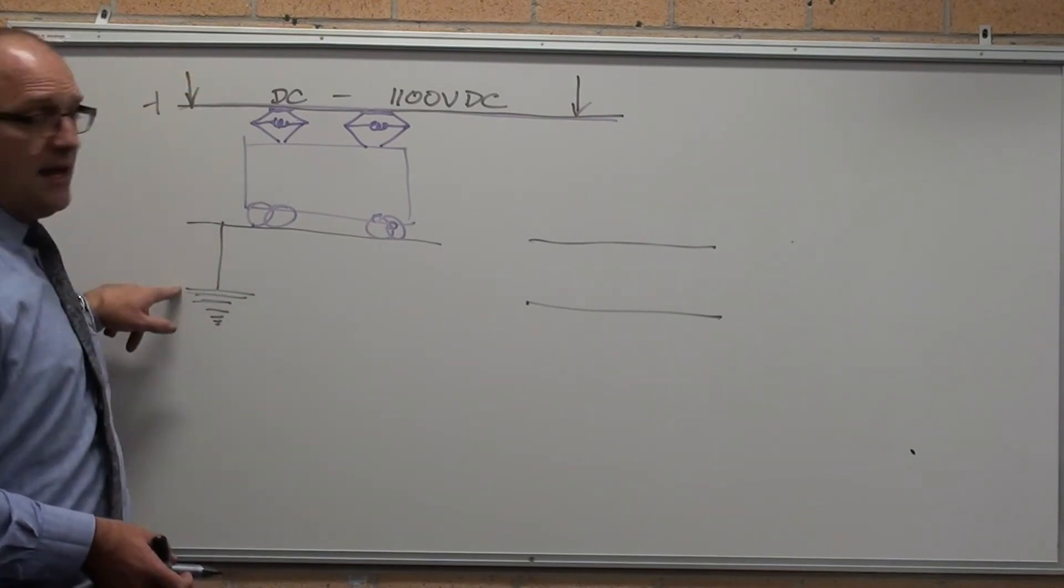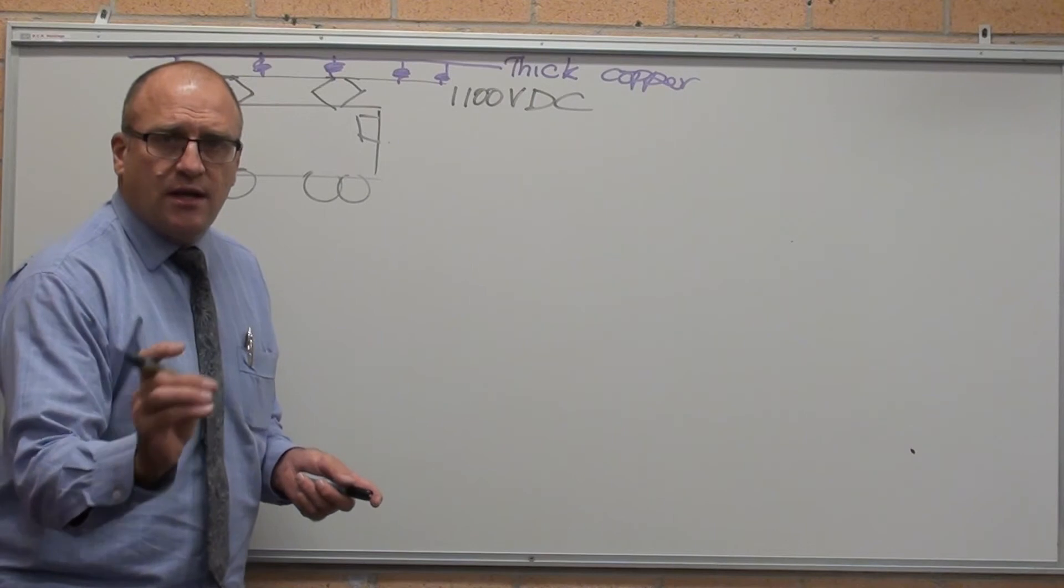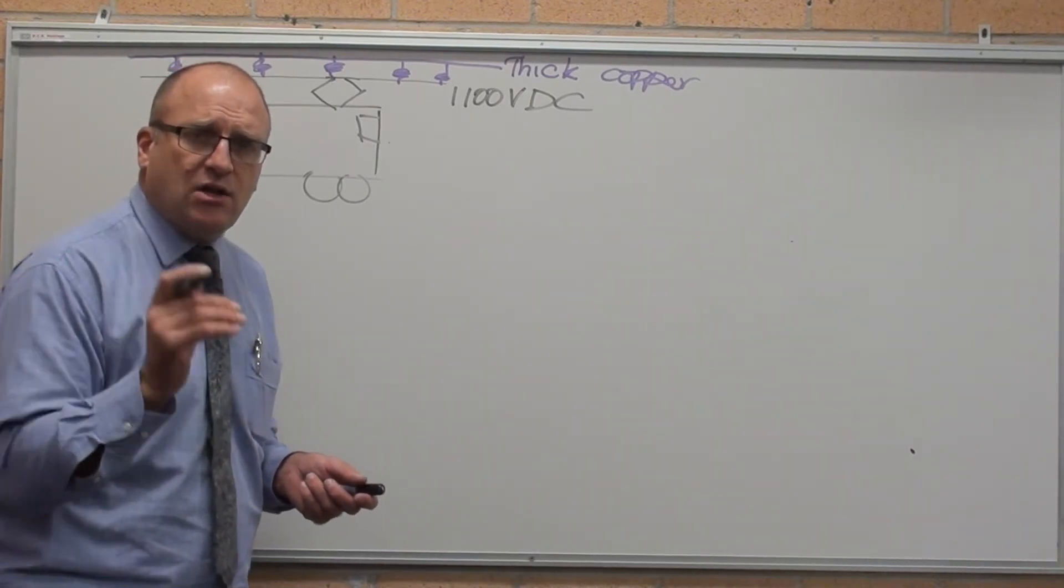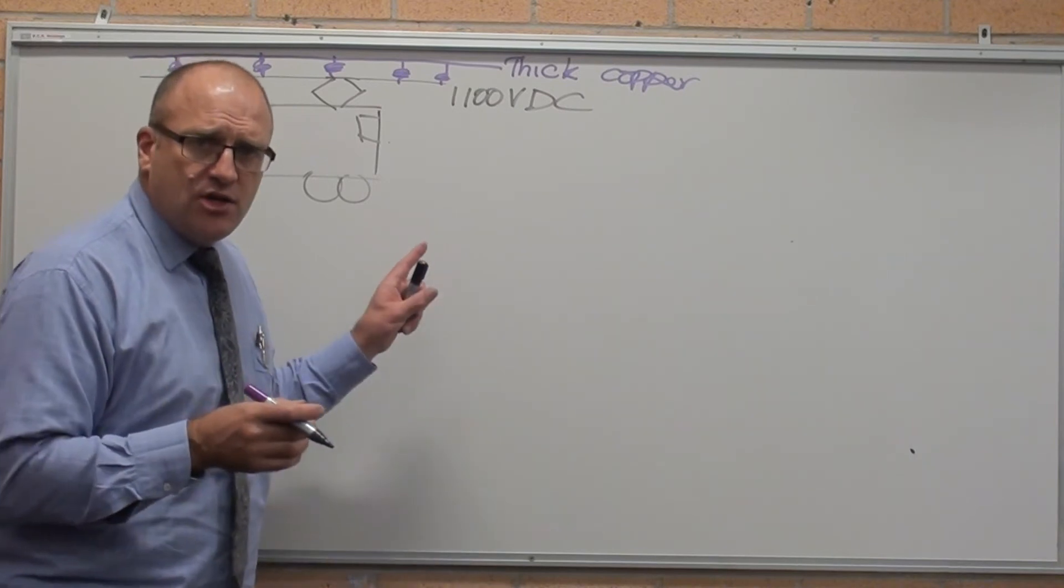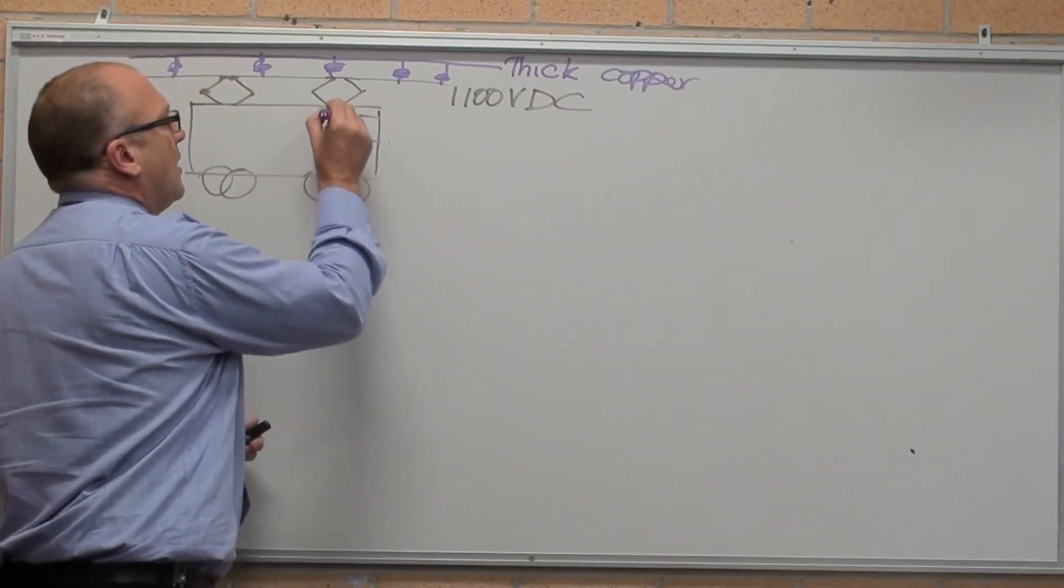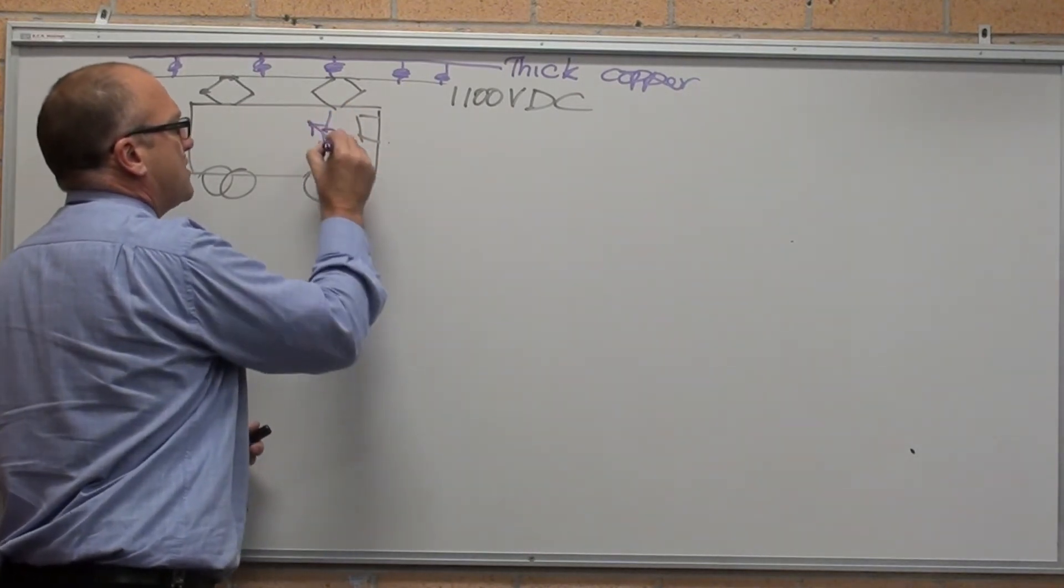So positive, negative. Of course, the trains, when they're coasting down an incline, aren't using power. They're generating electricity. Here we are with DC going back through the variable resistor.